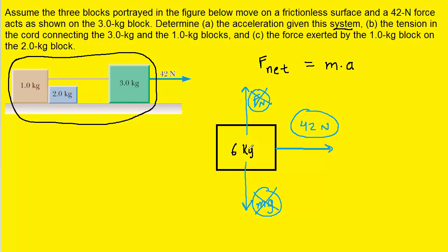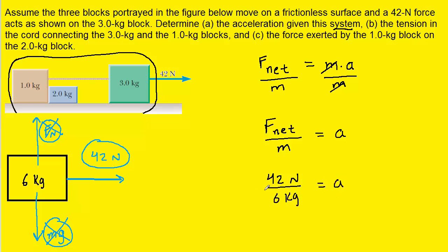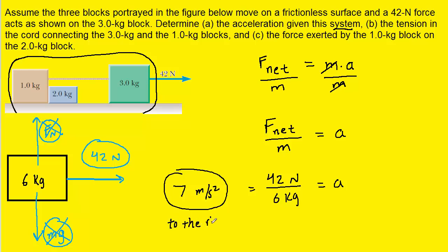The mass is six kilograms. We'll solve for acceleration by dividing both sides of the equation by the mass M so it cancels out on the right-hand side. Plugging in 42 Newtons for the net force and six kilograms for the mass gives us an acceleration of seven meters per second squared. Since acceleration is a vector, we must specify the direction — since the net force is pointing to the right, the acceleration also points to the right.